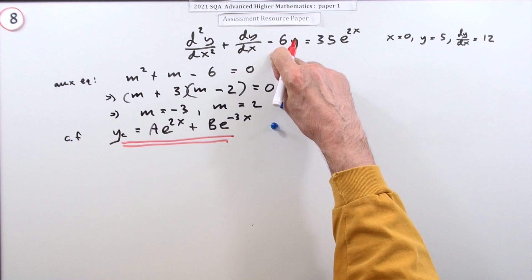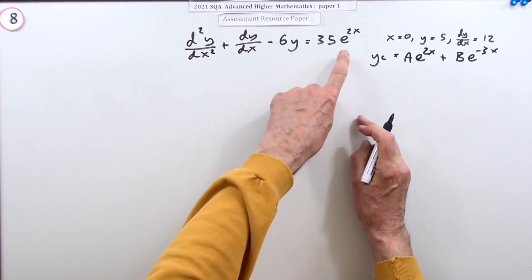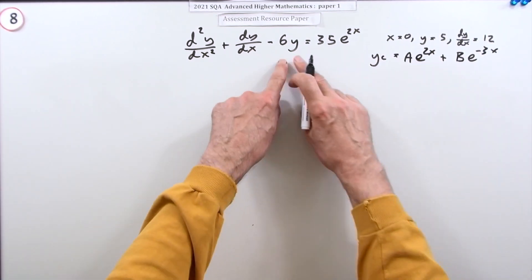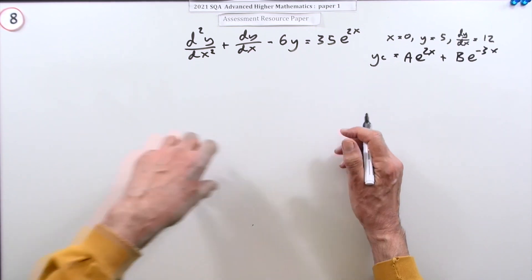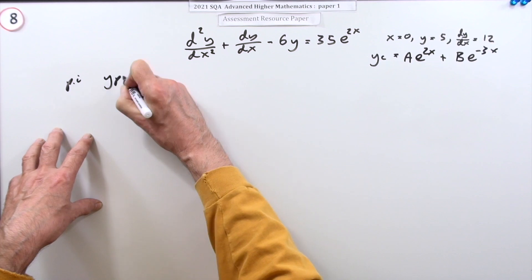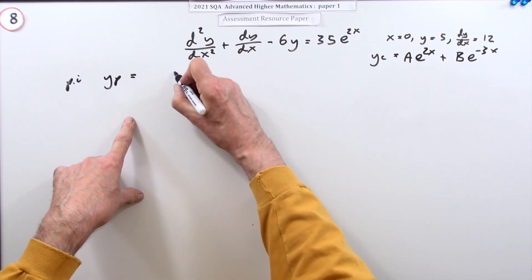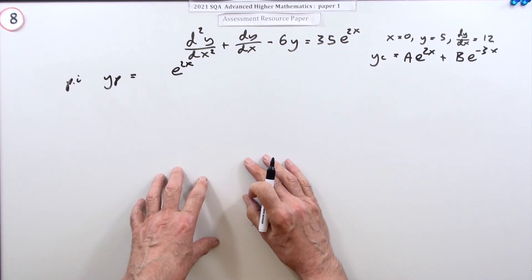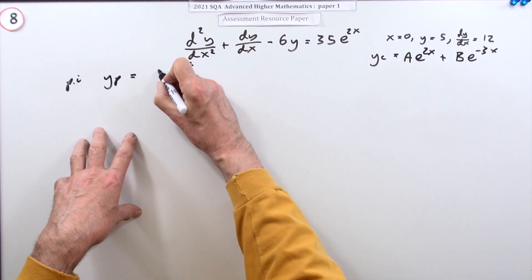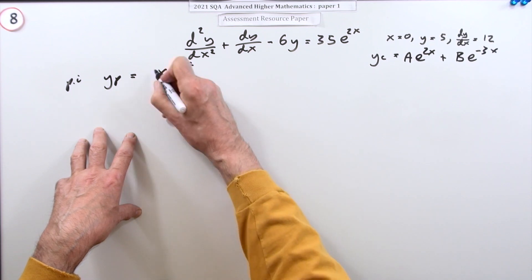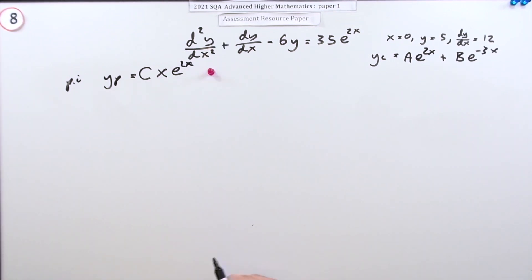Now for the second part: what particular form would actually produce the right-hand side, 35e^(2x)? The particular integral y_p needs to look like e^(2x) to produce e^(2x). However, we can't simply use ce^(2x) because that would give zero when fed into the equation — it's already part of the complementary function. In this case, multiply by x, so try y_p = cxe^(2x). That's the first mark for this stage.